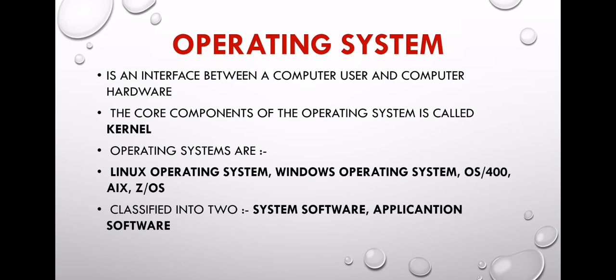Then, the Operating System. It is an interface between a computer user and computer hardware. The core component of the operating system is called the Kernel. Operating systems include Linux, Windows, OS/400, AIX, and z/OS. Software is classified into two types: System Software and Application Software.